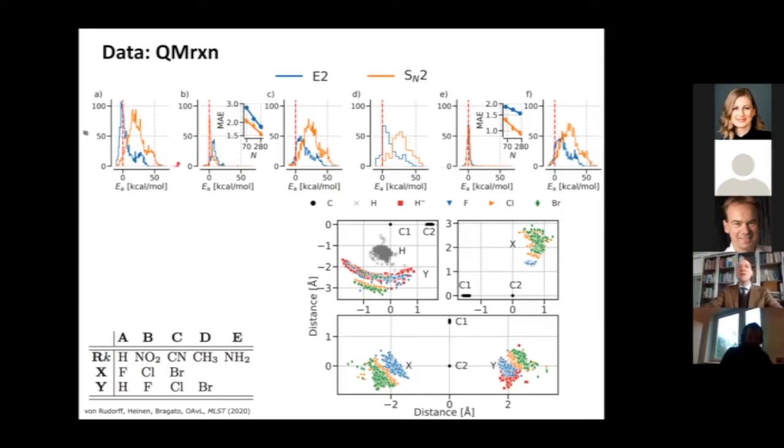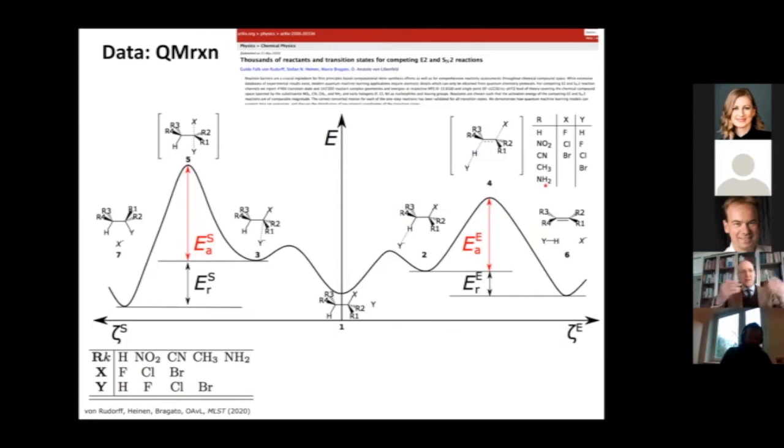An elimination and a substitution reaction. You see the substitution to the left and the elimination to the right - these are competing reactions. Using this dataset, we were wondering if we can study this with machine learning. Here you see a distribution of the activation energy. These barrier heights determine the kinetic stability. You have a trade-off between thermodynamic stability and kinetic stabilization.